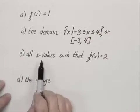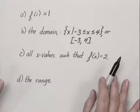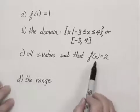For c, we're asked to find all x values such that f of x equals 2. Now before we go back to the graph, let's see what we're looking for. We want to find the x values, and we're given the function value.